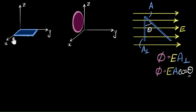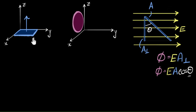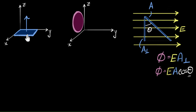Let's see how to treat area as a vector. If you have an area like this — a nice flat rectangular area — the way to think of it as a vector is you just draw an arrow mark perpendicular to this area. That is the direction of the area vector. The direction is always perpendicular, and the size will be proportional to the size of the area. In this case, we say our area points in the positive Z direction.